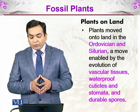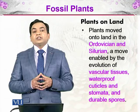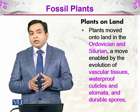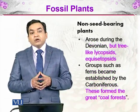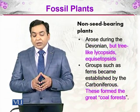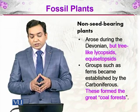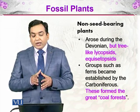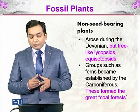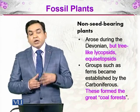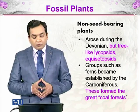There were also waterproof cuticles, stomata, and durable spores — other adaptations which enabled the terrestrialization of plants. Non-seed bearing plants arose during the Devonian, including tree-like lycopsids and equisetopsids. Groups such as ferns became established by the Carboniferous and formed the Great Coal Forest. The coal that we use today is actually coming from those coal forests.